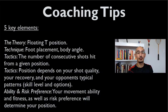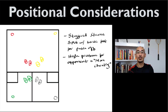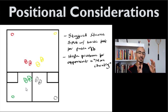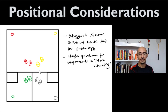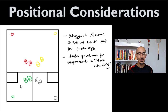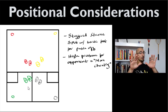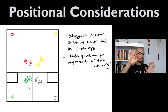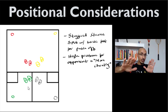Now talking about foot placement and body angle: depending on where the game is being played, the feet change — there's a stagger in the stance. If your opponent is hitting in the back left, you'll be on the T with your left foot slightly back and right foot slightly in front, because that right foot is going to push you back into that back left corner.